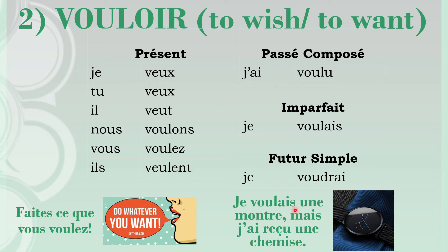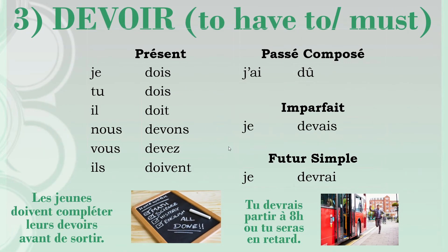The third and last modal verb for today is devoir, which means 'to have to do something' — you need to do something, or in English, the modal 'must.' An interesting thing to note: when you use devoir in the conditional — which 10th standard students know how to form — you obtain the modal 'should.' So devoir in the present tense means 'must,' and in the conditional it means 'should.' In the present tense: je dois, tu dois, il doit, nous devons, vous devez, ils doivent.